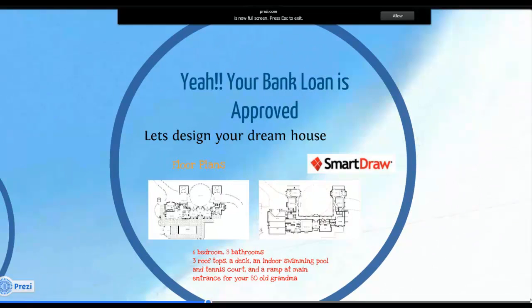Congratulations! Your bank loan has been approved. You're now ready to custom design your dream home. This is a 10,000 square foot home with six bedrooms, eight bathrooms, an indoor swimming pool and much more. To take on this challenge, you need to draw on your background knowledge in mathematics.